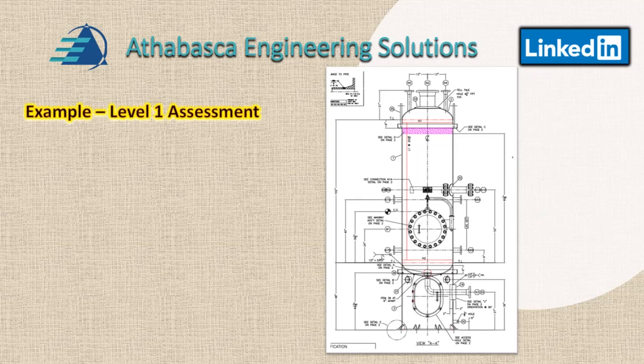Now we're ready to start a specific Level 1 example. We have a liquid knockout drum whose purpose is to separate liquid from vapor so there's no carryover downstream. The example involves a recent upset condition where high-temperature liquid was relieved into the vessel for a period of time and was subject to temperatures in the creep range. We're going to break this out using Table 2.2.